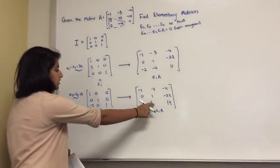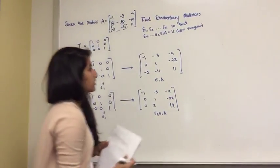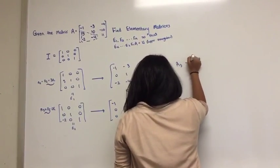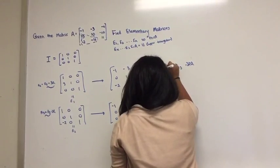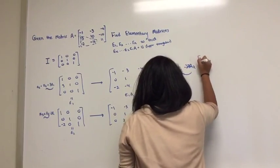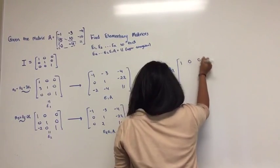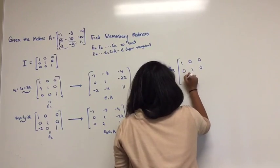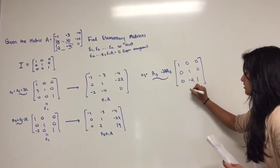Now your last step, you want to get rid of this 2. So what you're going to do is you'll say, let me write it over here, you'll say R3 minus R2, minus 2R2. You'd say R3 equals R3 minus 2R2. And that's going to, when you perform that on your identity matrix, you get the new matrix 1, 0, 0, 0, 1, 0, 0, negative 2, 1. So this would be E3.